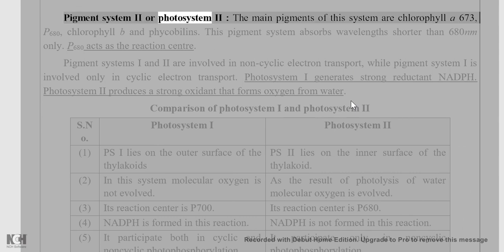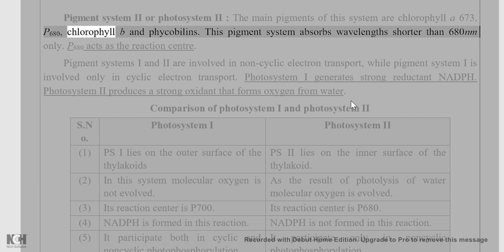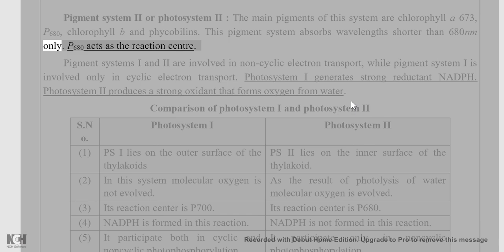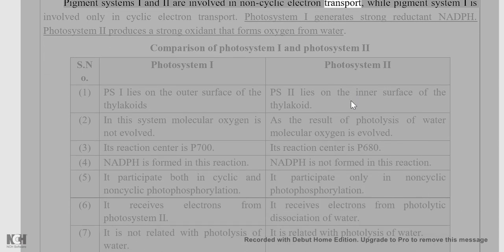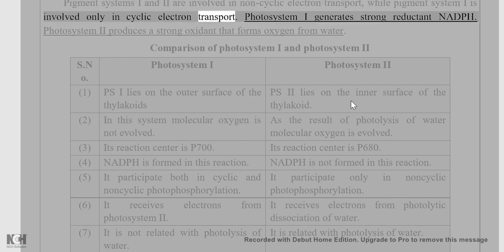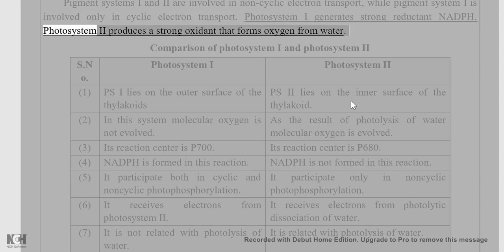Pigment System II (Photosystem II): the main pigments are chlorophyll a 673, P680, chlorophyll b, and phycobilins. This pigment system absorbs wavelengths shorter than 680 nm only; P680 acts as the reaction center. Photosystems I and II are both involved in non-cyclic electron transport, while Photosystem I alone is involved in cyclic electron transport. Photosystem I generates a strong reductant NADPH; Photosystem II produces a strong oxidant that forms oxygen from water.